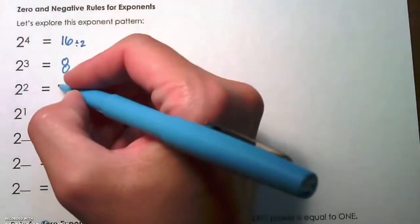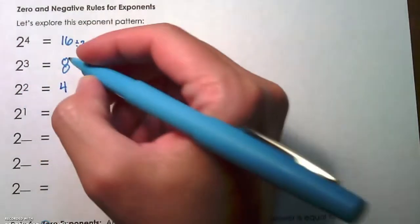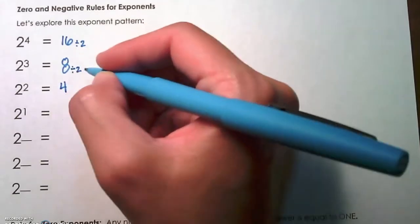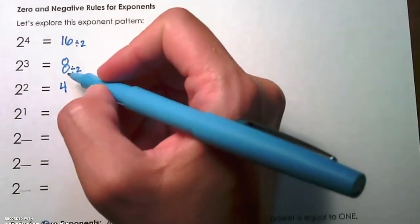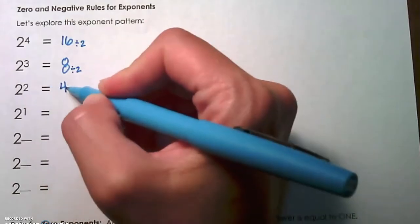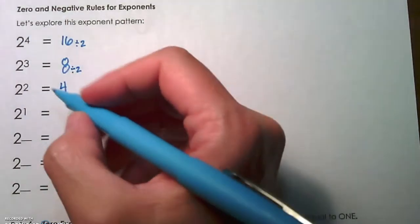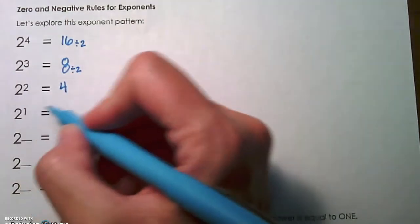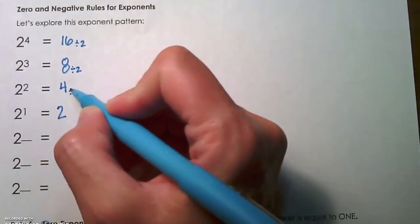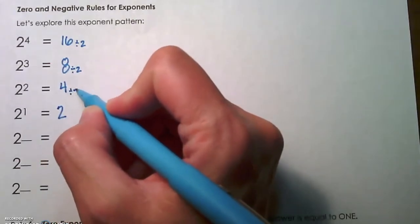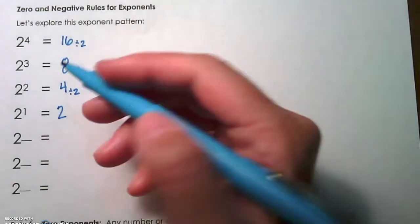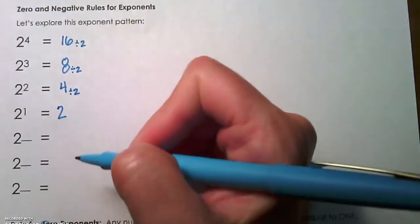2 squared is 4. If I take 8 and divide by 2, which means I'm taking away a factor of 2 to make it 2 squared, I get 4. 2 to the first power is 2. We're going to continue dividing by 2 as we remove an exponent. So 4 divided by 2 gives us 2.